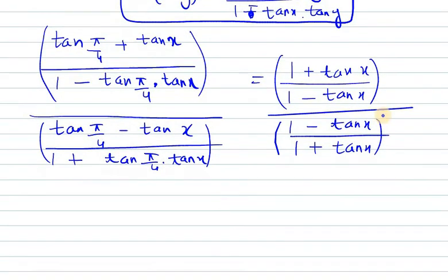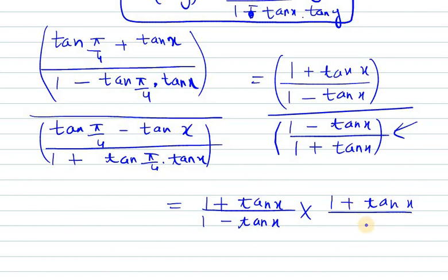Now in this case, you can see we have one numerator and one denominator. So I will be writing the numerator first, that will be 1 plus tan x over 1 minus tan x. Now we need to take the reciprocal of this. So the reciprocal of this will be 1 plus tan x over 1 minus tan x. So at the numerator we have two values the same, that is (1 + tan x)/(1 - tan x) whole square.